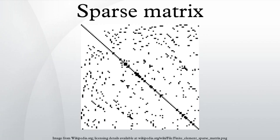Storing a sparse matrix: A matrix is typically stored as a two-dimensional array. Each entry in the array represents an element (i,j) of the matrix and is accessed by the two indices i and j.